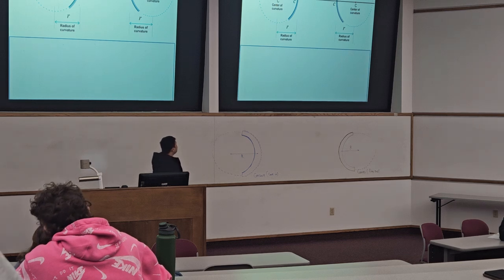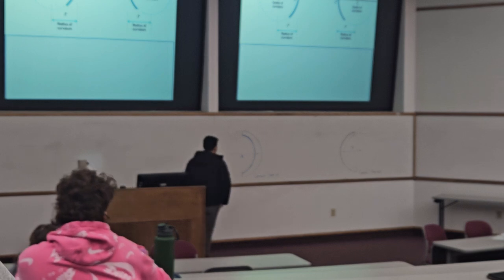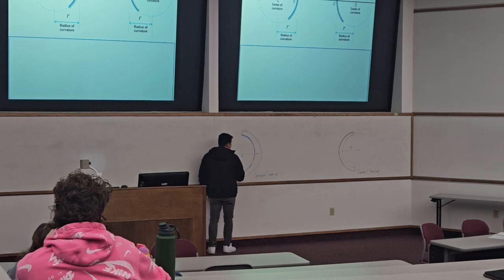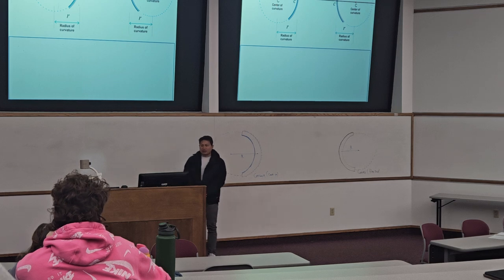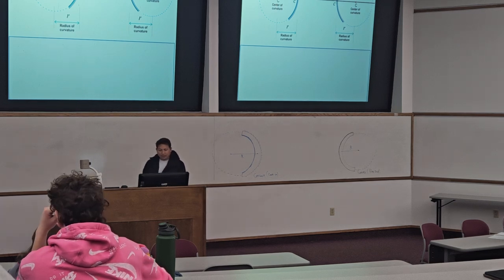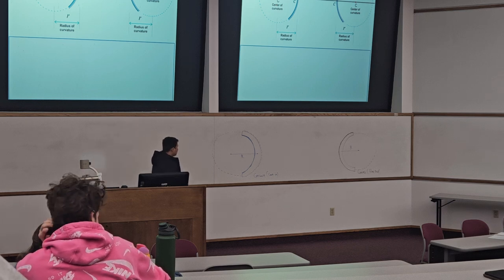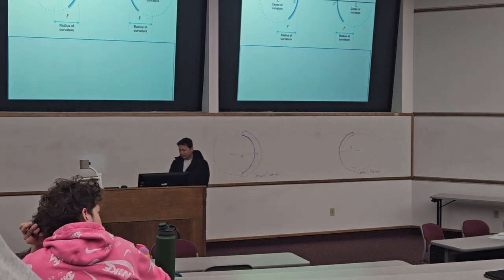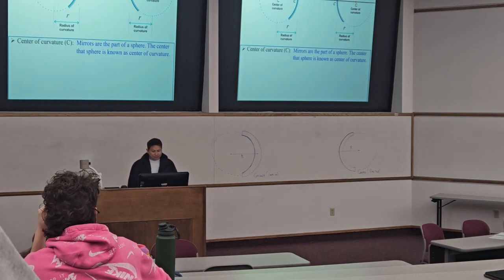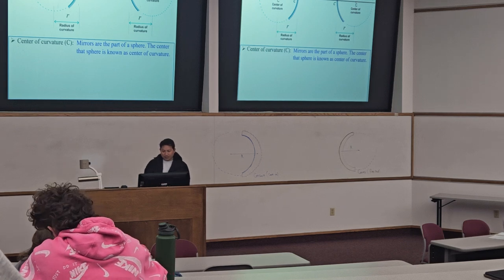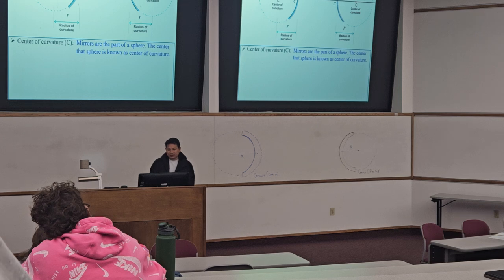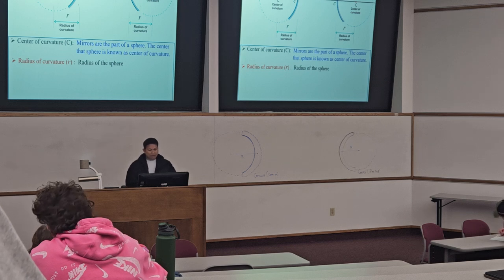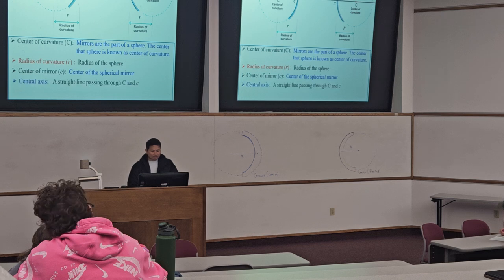The radius of curvature applies to both concave and convex mirrors. Some people write capital R, some write small r, but the meaning is the same. By definition, the mirror is a part of a sphere. The center of that sphere is known as the center of curvature, and half of the diameter is the radius of curvature.